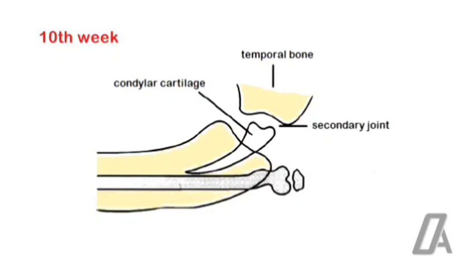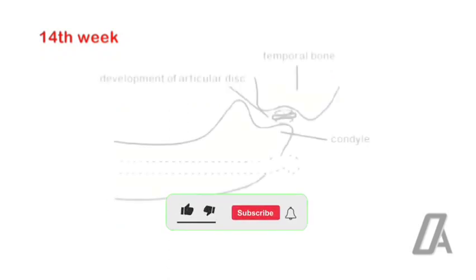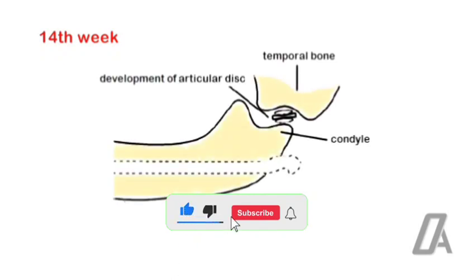The condyle arises as a separate mesenchymal condensation that is cone-shaped at about the tenth week. The process of ossification does not start till the fourteenth week. The cartilage is replaced by bone, except in the region of the head of the condyle superiorly, which is maintained till the teens for future growth. Now that the condyle is established, the TMJ is shifted anteriorly.